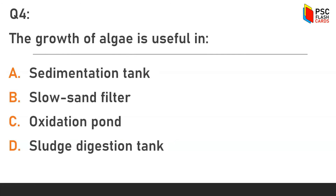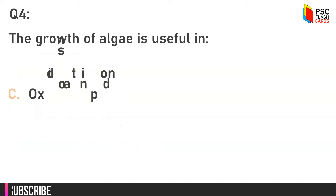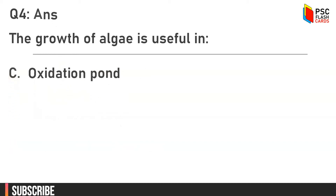Question number four: the growth of algae is useful in — option A: sedimentation tank, option B: slow sand filter, option C: oxidation pond, option D: sludge digestion tank. The answer is option C, oxidation pond.